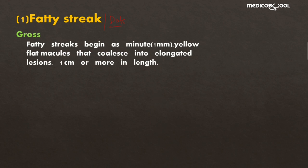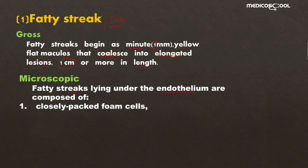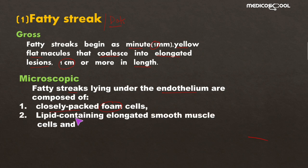What are the fatty streaks or dots, and what are their gross and microscopic features? Grossly, the streaks are minute, about one millimeter, yellow-colored flat macules that may coalesce into elongated lesions about one centimeter or more in length. Microscopically, fatty streaks are lesions which lie under the endothelium and are composed mainly of closely packed foam cells, along with lipid-containing elongated smooth muscle cells.